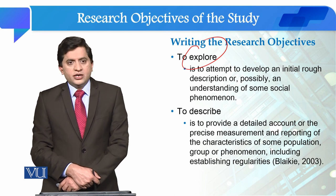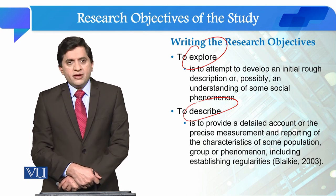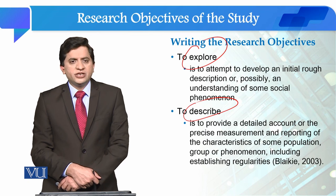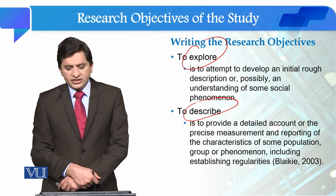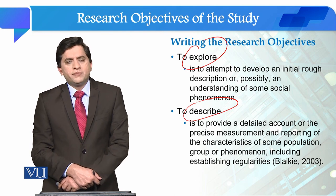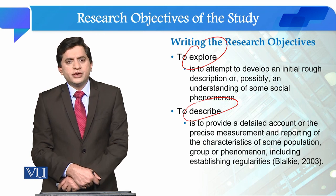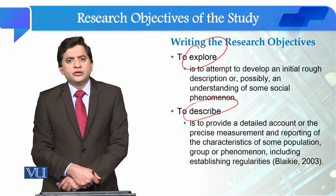The second way of writing a research objective is 'to describe.' We write this type of research objective when we have to provide a detailed account or the precise measurement and reporting of the characteristics of some population group or phenomena, including establishing regularities. یہ secondary level کا research objective ہے جس میں ہم کسی social problem کی basic characteristics study کرتے ہیں اور اس سے relevant propositions develop کرتے ہیں۔